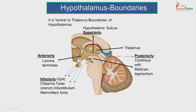The boundaries of the hypothalamus: it is ventral to the thalamus with the hypothalamic sulcus separating them. Superiorly is the hypothalamic sulcus, anteriorly is the lamina terminalis, posteriorly it continues with the tegmentum of the midbrain, and inferiorly we have the optic chiasma, the tuber cinereum, the infundibulum and the mammillary body. Within these boundaries encloses the hypothalamus.